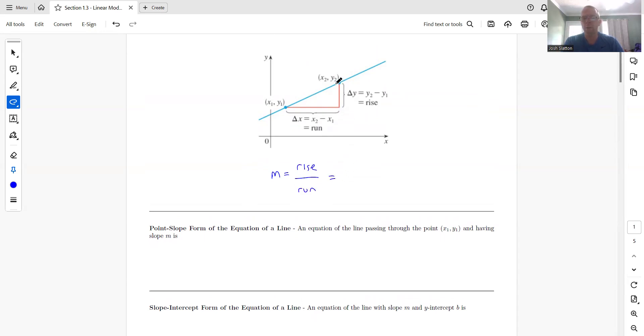But it is also the slope between the point x1, y1 and x2, y2. We could write this as the change in the y coordinates, y2 minus y1, and then divided by the change in the x coordinates, which would be x2 minus x1.